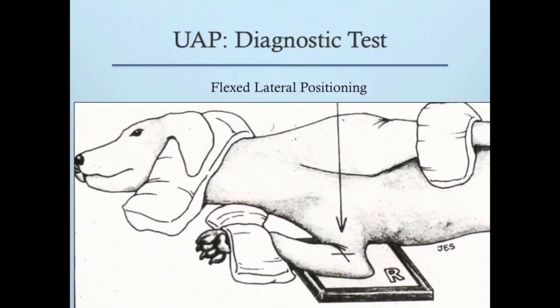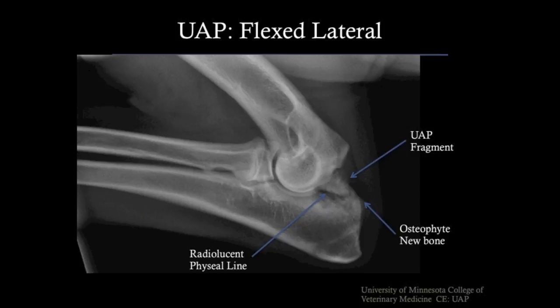Since dogs with a UAP can concurrently have other orthopedic abnormalities, it is important to also review a cranial-caudal radiograph of the elbow. Computed tomography is an excellent alternative imaging technique. This 8-month-old German Shepherd has an ununited anconeal process with typical radiographic findings: a radiolucent line separating the larger anconeal fragment from the remainder of the ulna. This dog also has osteophyte or callus formation near the radiolucent line, which may be evidence of an attempt to bridge the gap between the ulnar metaphysis and the UAP.